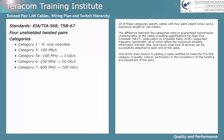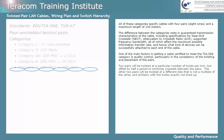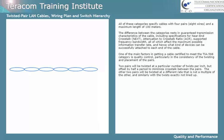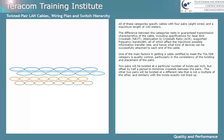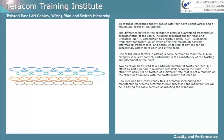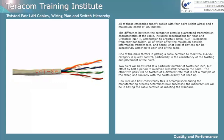One of the main factors in getting a cable certified to meet the TIA 568 category is quality control, particularly in the consistency of the twisting and placement of the pairs. Two pairs will be twisted at a particular number of twists per inch, but offset by half a period to minimize crosstalk between the pairs. The other two pairs will be twisted at a different rate that's not a multiple of the first one, similarly with the twists not exactly lined up. How well and how consistently this is accomplished during manufacturing determines how successful the manufacturer will be in having the cable certified.